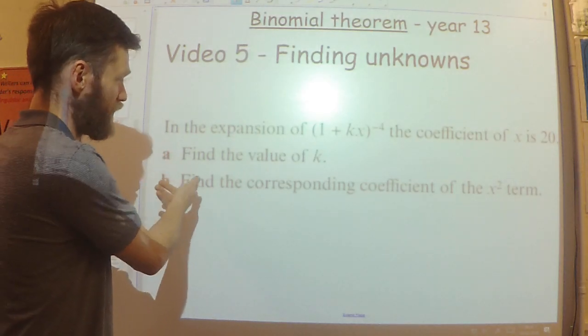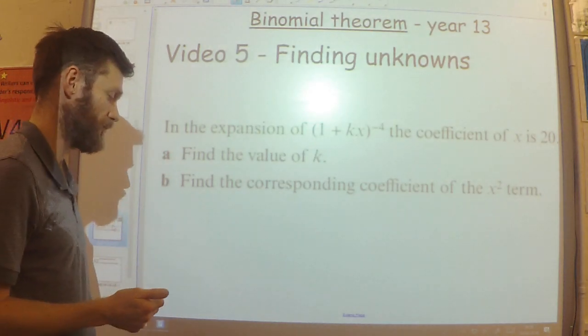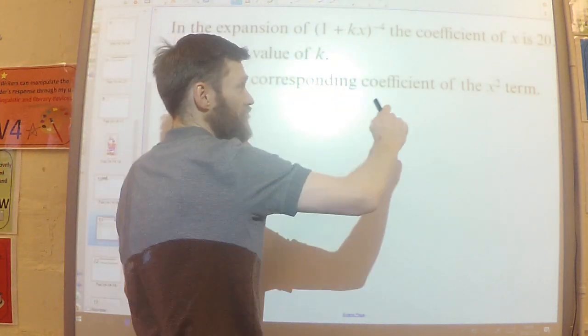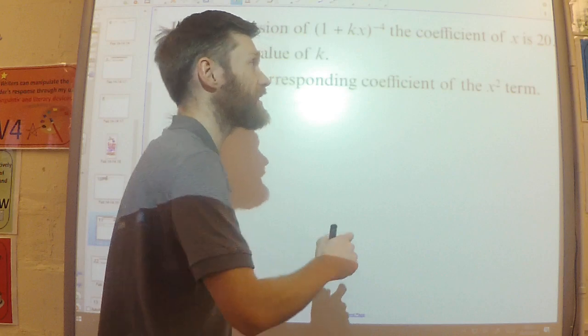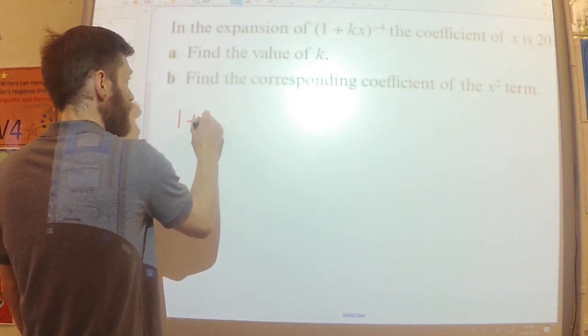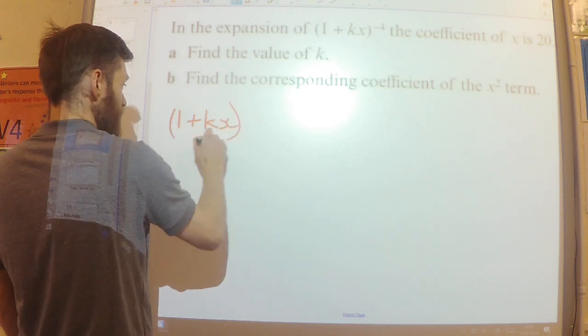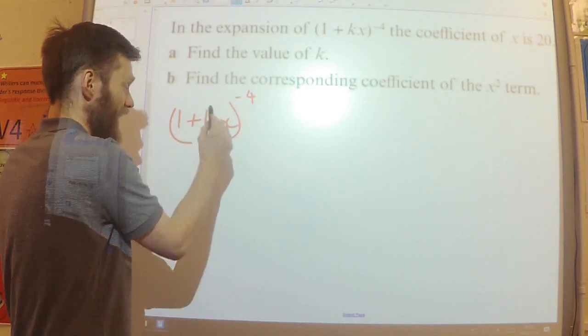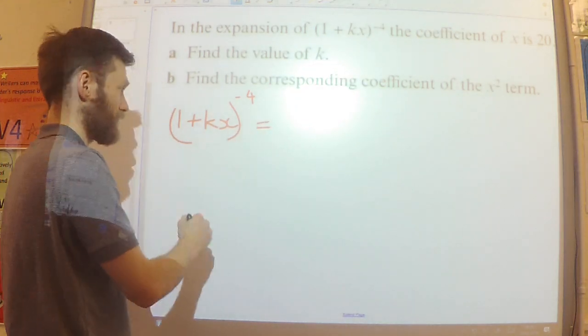And then it says, find the value of k. So first of all, let's expand this out and let's find out what the coefficient of x is in terms of k. So I don't need to do any factorising. My n is minus 4 and my x is kx.